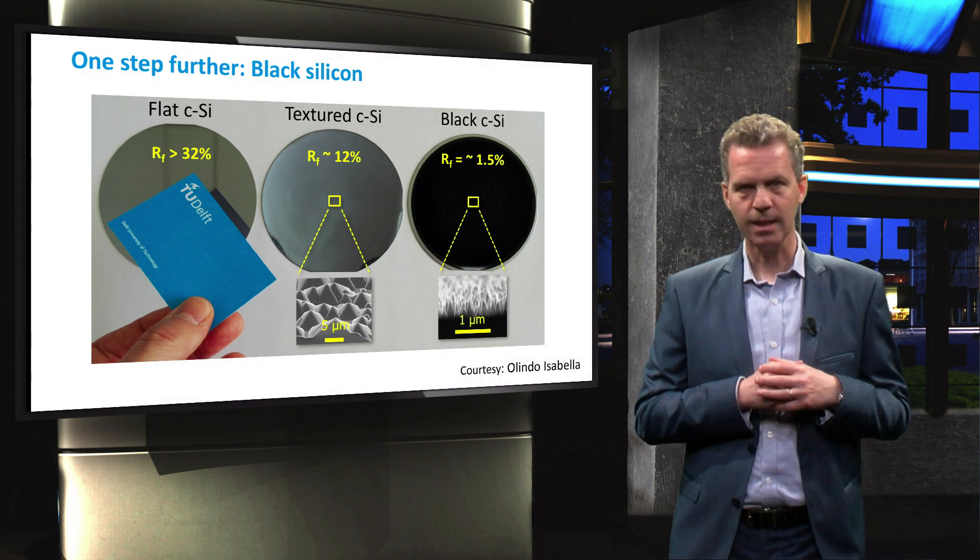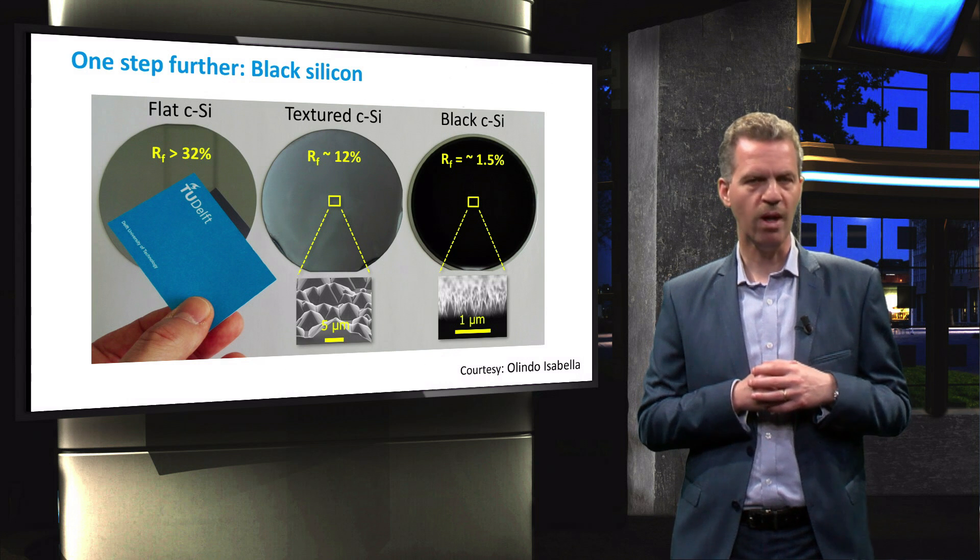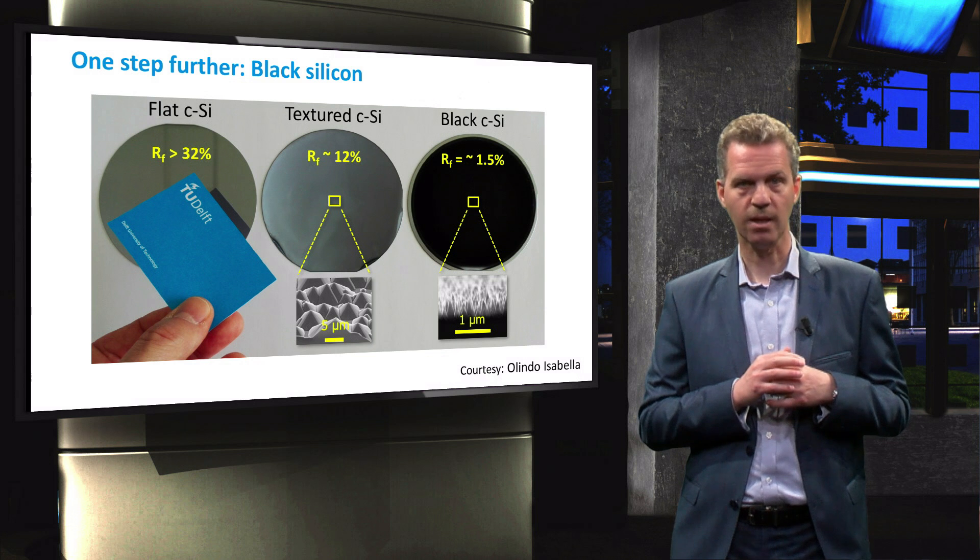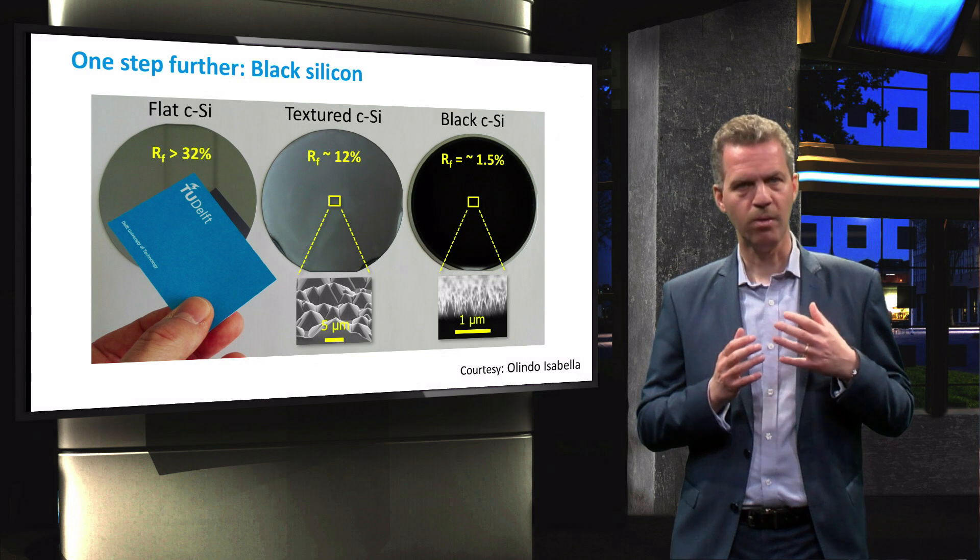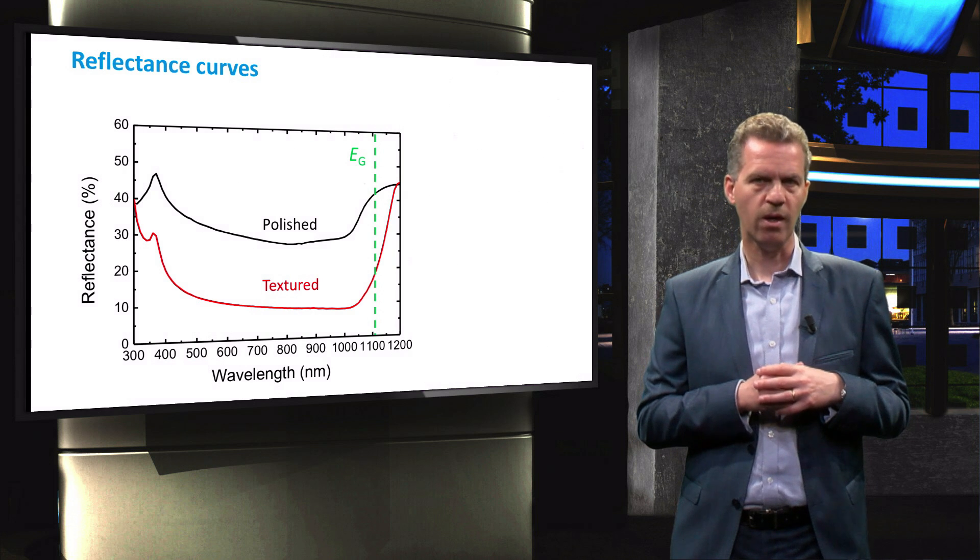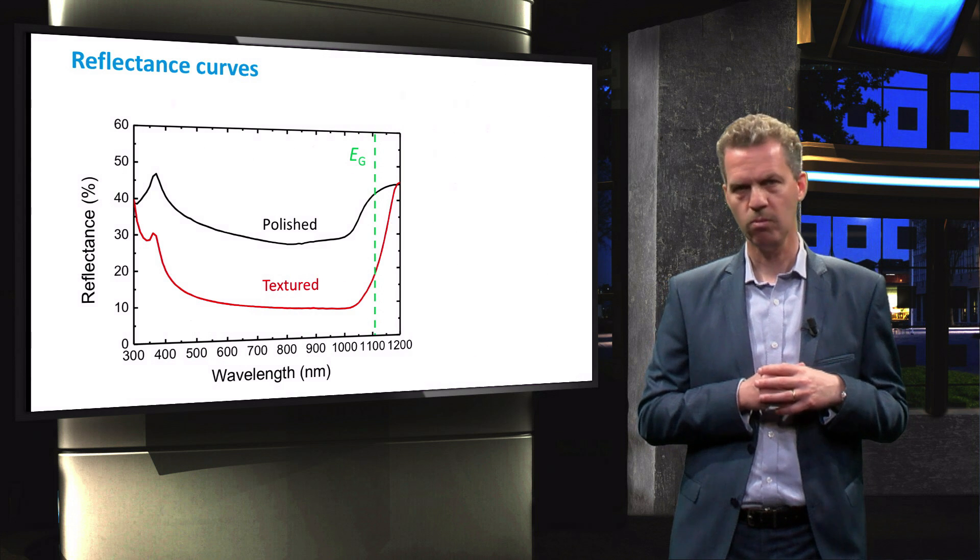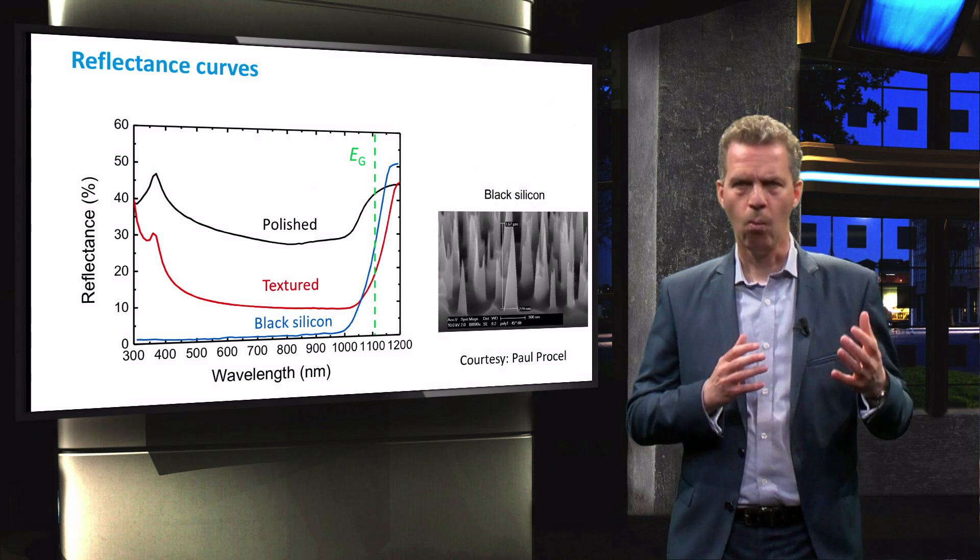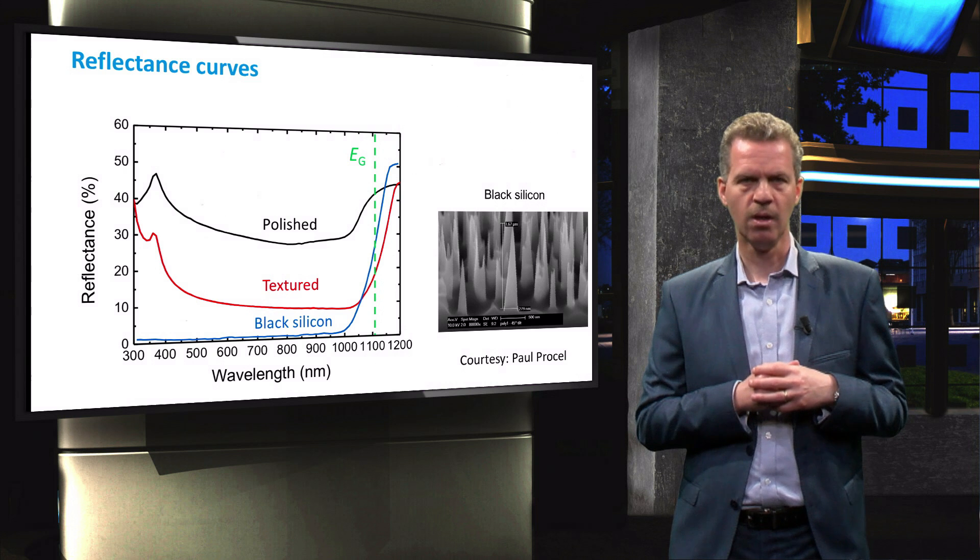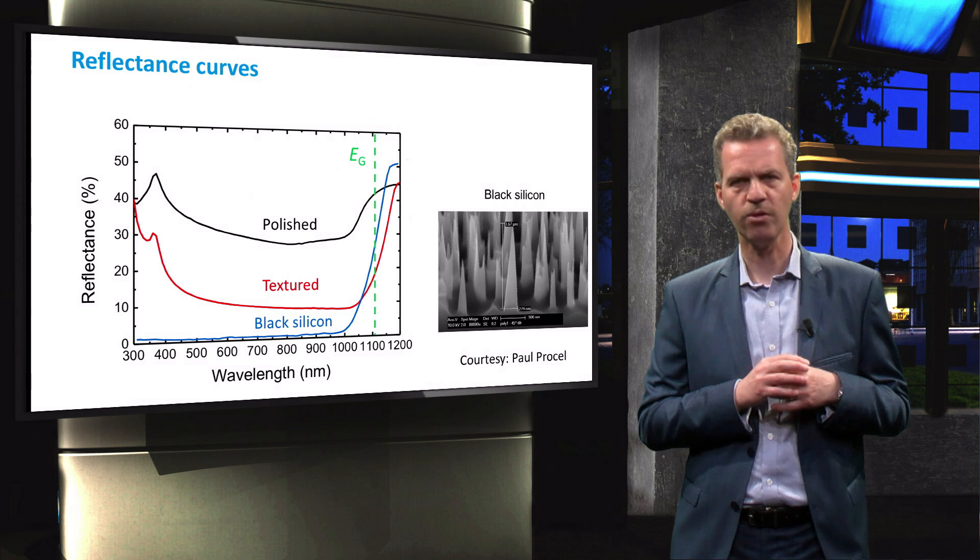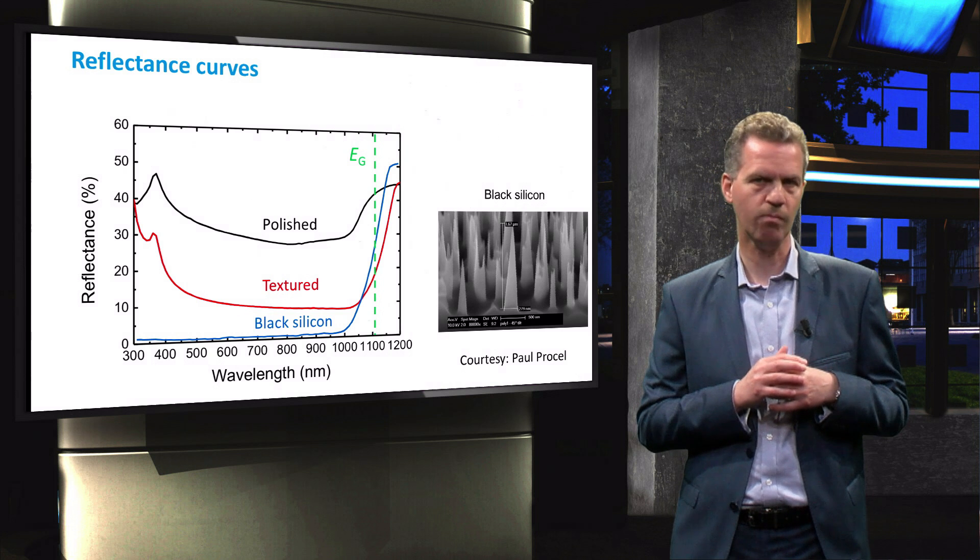With so-called black silicon, the reflectance up to a wavelength of 1100 nm corresponding to the bandgap of crystalline silicon can be made virtually zero. The reflectance profile of polished random pyramidal texture and black silicon are shown here. When we add the reflectance curve of black silicon, we can conclude here that texturing can reduce the front surface reflection almost completely.